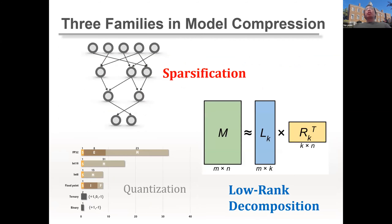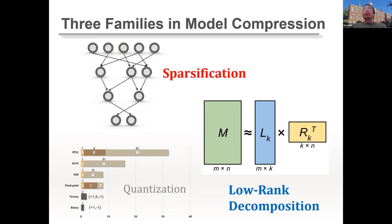For model compression, we typically have three families of methods. First is sparsification — making the model sparse by removing unnecessary weights and connections. Second is quantization — reducing the number of bits to represent weights, from 32 or 16-bit floating point down to 8, 4, or even 2 bits. Third is low-rank decomposition, using linear algebra techniques to factorize the model into smaller fragments, reducing computational and storage cost.